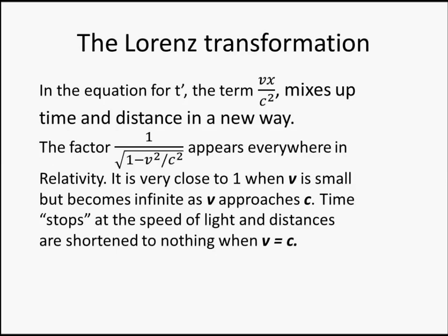That factor, 1 over the square root of 1 minus v-squared over c-squared, appears all over in the relativistic equations. It's always greater than 1, but when v is small, it's very close to 1. For instance, let's say v is as big as 0.1c, or 30,000 km per second, more than a thousand times faster than any spacecraft we have ever built. That factor then works out to only 1.005, still pretty close to 1.